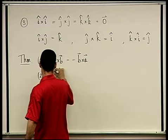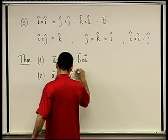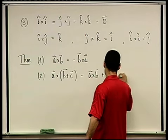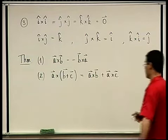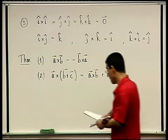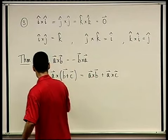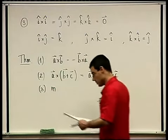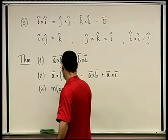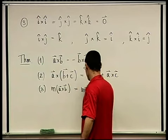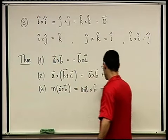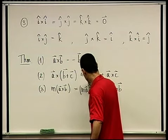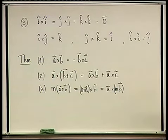Distributivity holds: A cross (B + C) equals A cross B plus A cross C. This is the distributive law and it holds. Also, if you throw in a scalar m, it moves around freely: m times (A cross B) equals (mA) cross B equals A cross (mB).